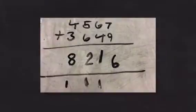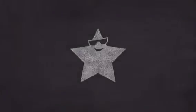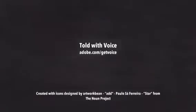4 add 3 equals 7, add the 1 equals 8, and then it gives you a total of 8,216. Now you are a superstar at the column method.